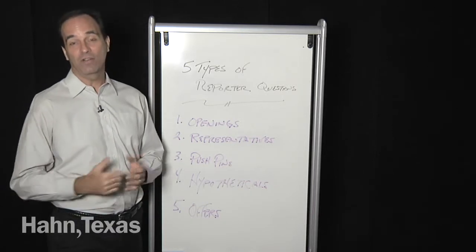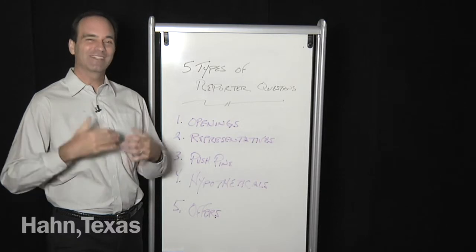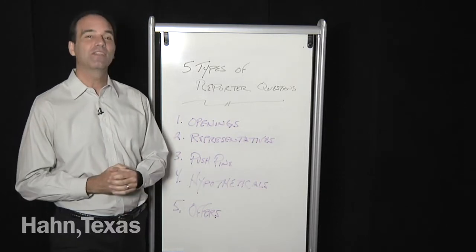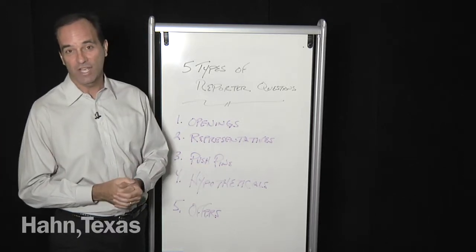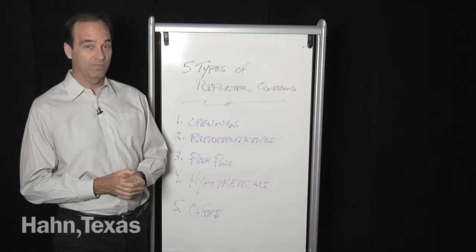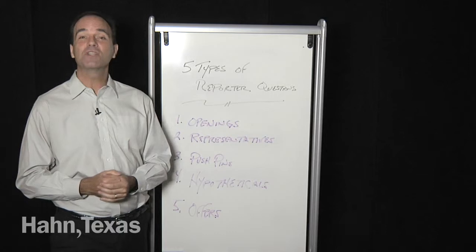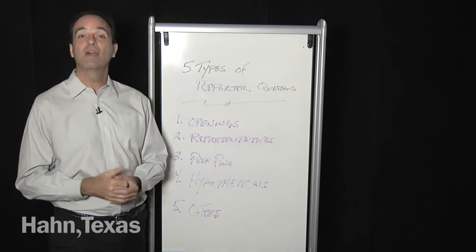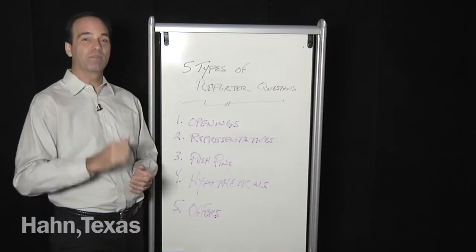Pushpins and hypotheticals are tools that reporters use to try to get you to say negative things or put you on the defensive. Hypotheticals are pretty obvious, questions like 'so if you were in charge, what would you do?' Pushpins are purposely designed to put you on the spot, put you on the defensive and get you to say something negative. Here are some examples.